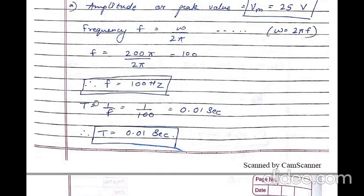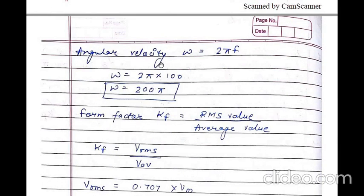Next, time period T is equal to 1 upon f. Substituting the value of frequency, T is equal to 1 upon 100, so time period T is equal to 0.01 second. Angular velocity omega is equal to 2πf. Substituting frequency as 100, omega is equal to 2π into 100, that is omega is equal to 200π. You can also directly write omega equal to 200π by comparing the given equation with the standard equation.